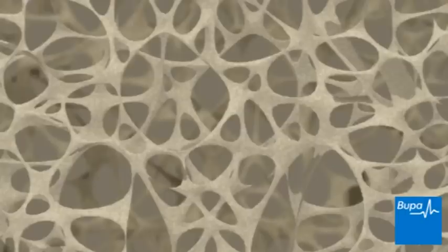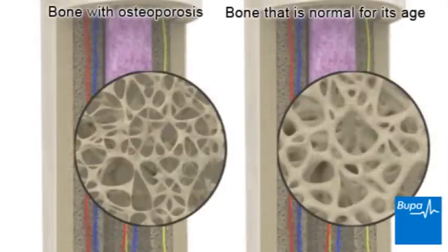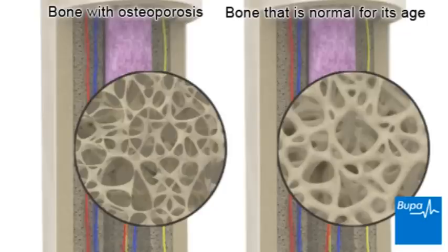Osteoporosis means porous bones. Bone with osteoporosis has a low mass because the mesh of proteins and minerals has been broken down. Here we compare a bone with osteoporosis to a bone with normal mass for its age. You can see that the bone with osteoporosis is much thinner because the mesh of proteins and minerals has been broken down. This means it's more likely to break or fracture.